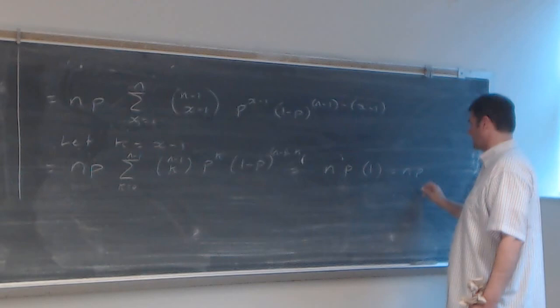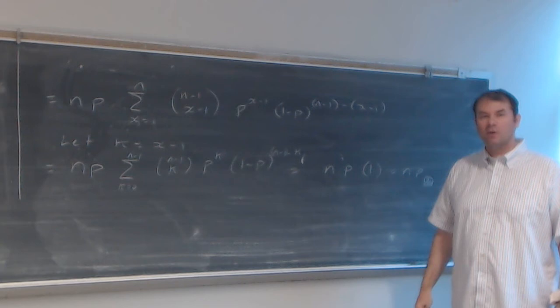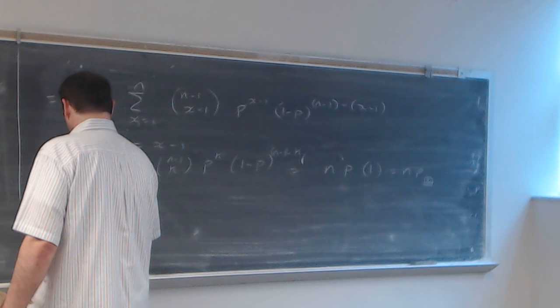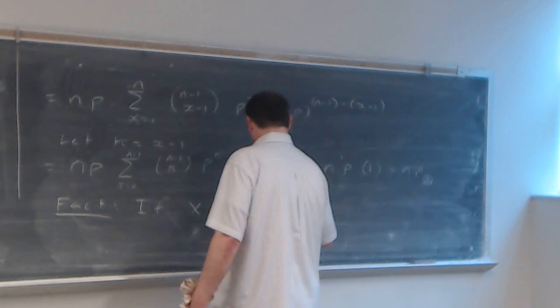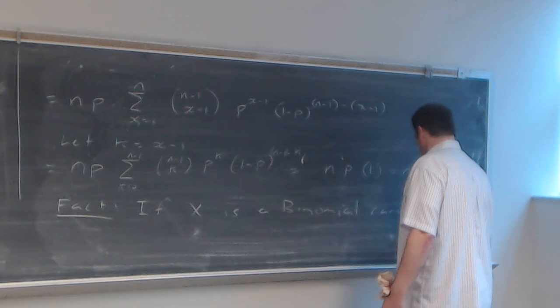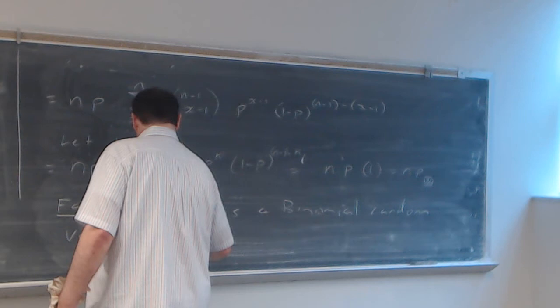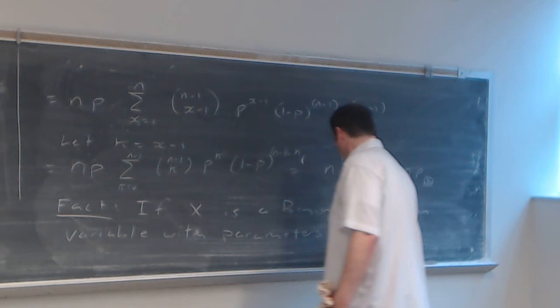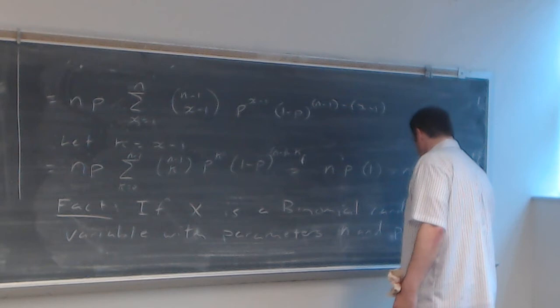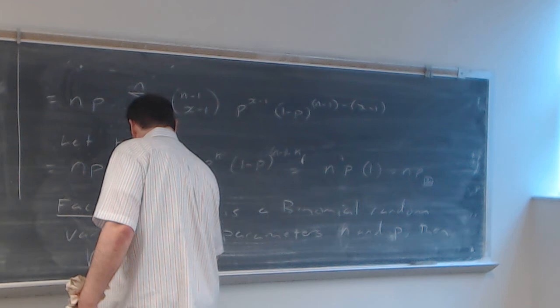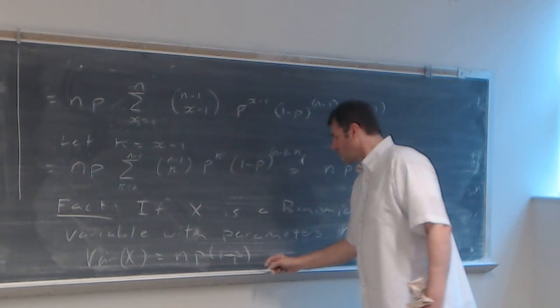As a fact, if x is a binomial random variable with parameters n and p, then the variance of x equals n·p·(1−p). That's exactly p·(1−p) — the variance of Bernoulli — multiplied by n.